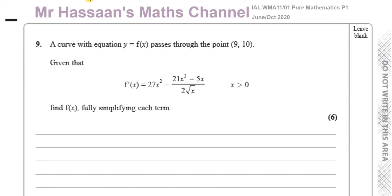Here we have a question about a function that's given, and we don't actually have the function itself but we have the gradient function. f'(x) means the gradient of this function — this is the differential of the original function — and we know that the original function passes through the point (9, 10). The gradient function is given by 27x² minus (21x³ minus 5x) all over 2√x, where x > 0. We have to find the function f(x), fully simplifying each term.